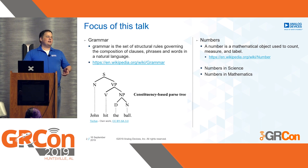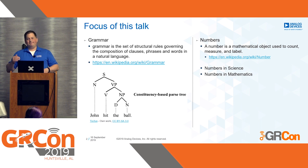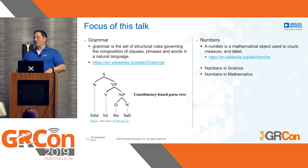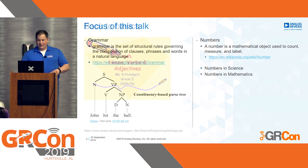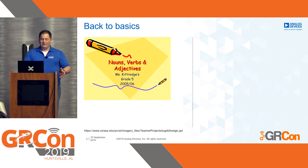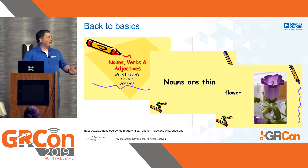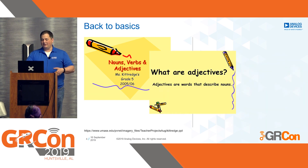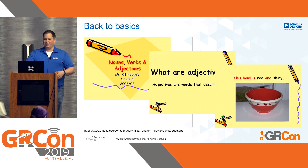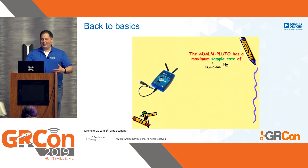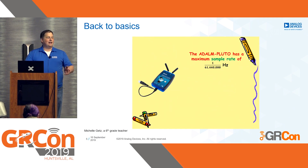Whenever I start these introductory-level talks I like to go back and see what other people have done — what we learned in high school or grade school that everybody should have remembered. I found these great slides from the University of Massachusetts where a grade five teacher, Miss Kitteridge, goes over nouns, verbs, and adjectives. Nouns are things — like flowers, bandwidth, samples. Adjectives describe those nouns: 'the bowl is red and shiny,' or 'the Pluto has a maximum sample rate of one over 61,440,000 hertz.' These are just nouns and adjectives.